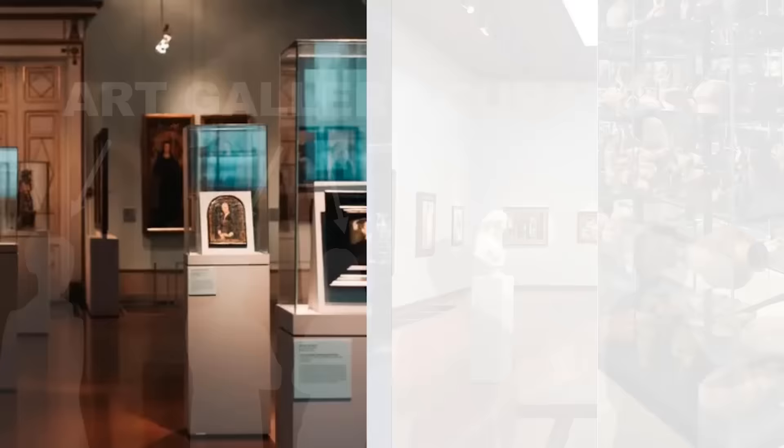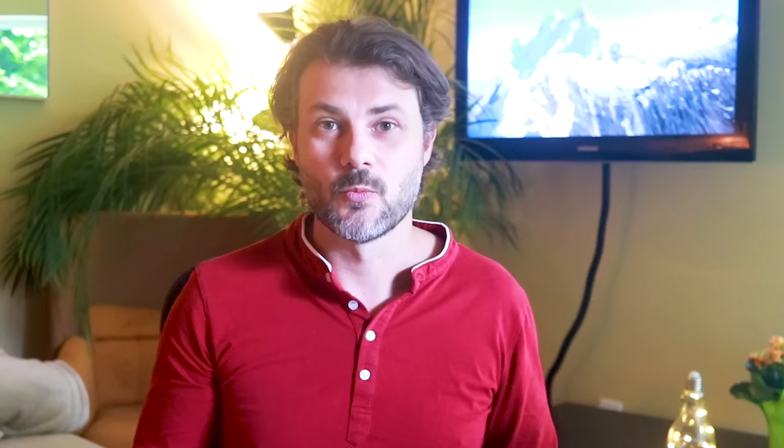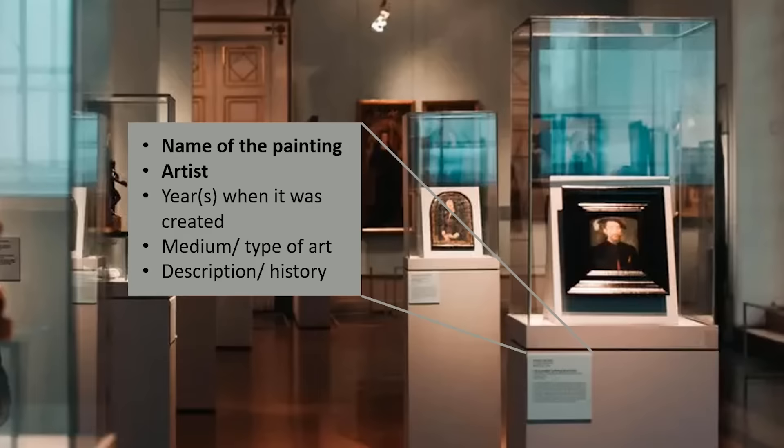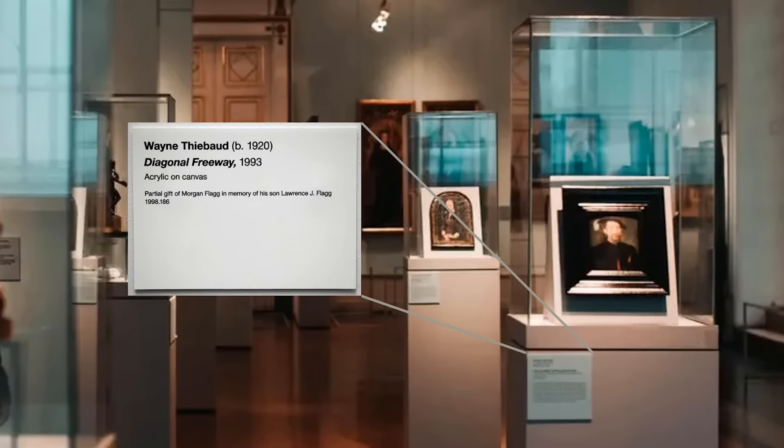Let's explore this art gallery analogy some more and see what art gallery curators do and how this relates to data stewards. Within one of the art galleries, everything is laid out in an optimal place to be enjoyed by visitors. Each art piece — each painting — has a plaque where you can read the name of the painting, the artist, the years associated, the style, the medium, and sometimes even a description or history of the art piece.